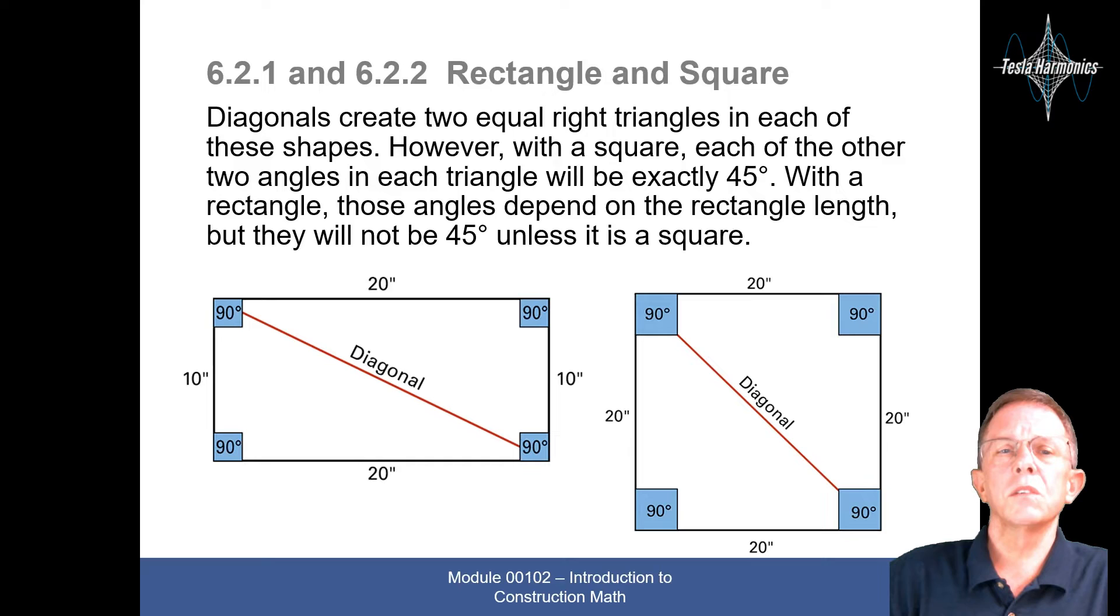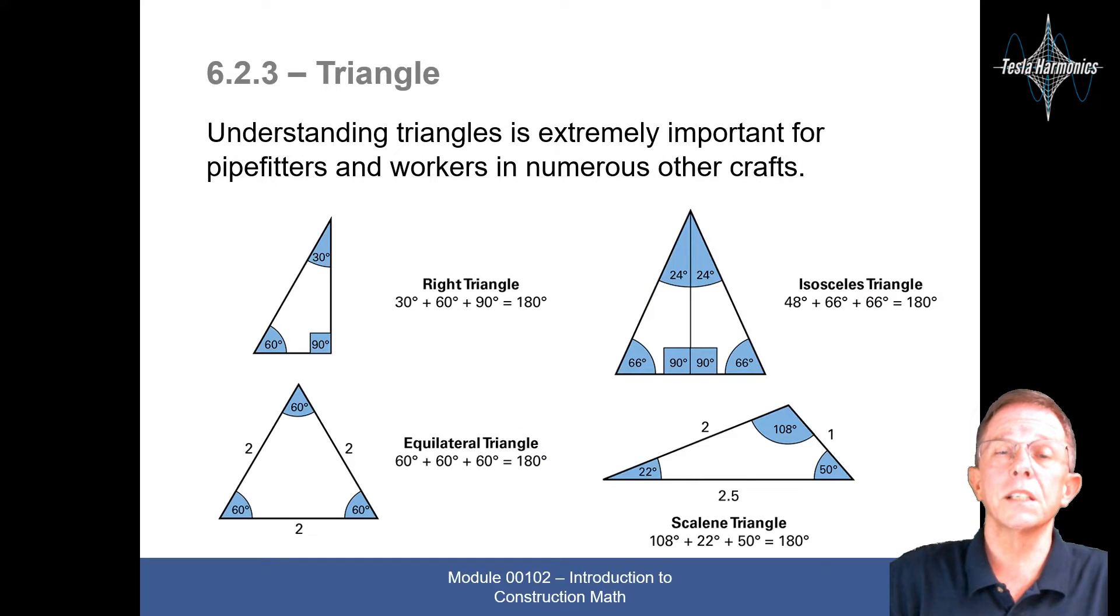Diagonals create two equal right triangles in each of these shapes. However, with a square, each of the other two angles in each triangle will be exactly 45 degrees. With a rectangle, these angles depend on the rectangle's length, but they will not be 45 degrees unless it is a square.